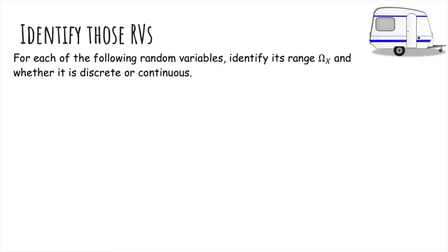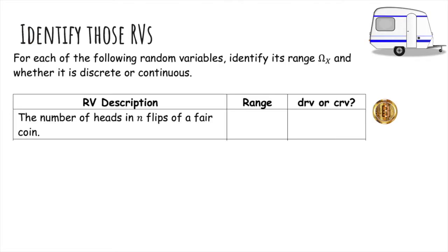So let's try to classify some. The number of heads in n flips of a fair coin. The range is the possible values you can take on, which is from zero to n. And it's a discrete random variable because there's only finitely many outcomes.